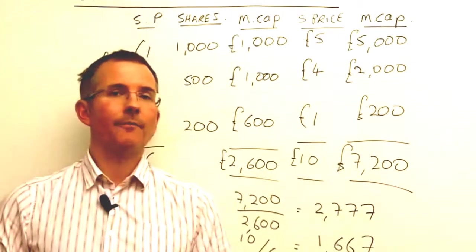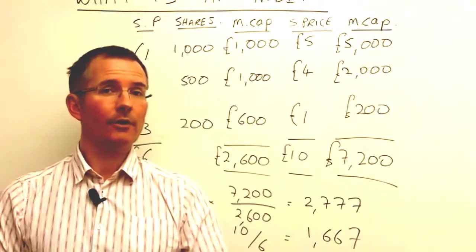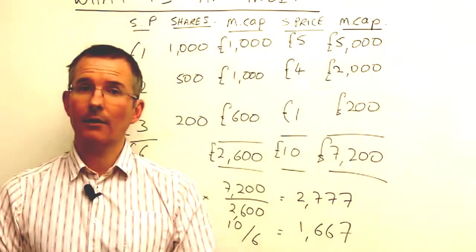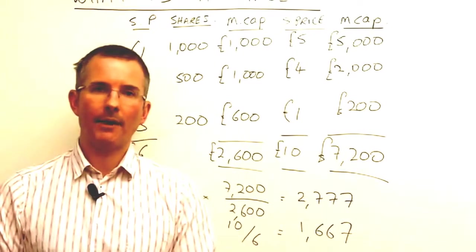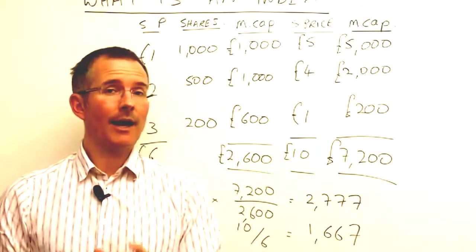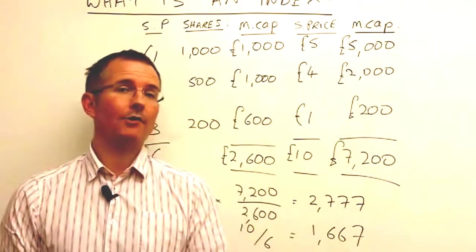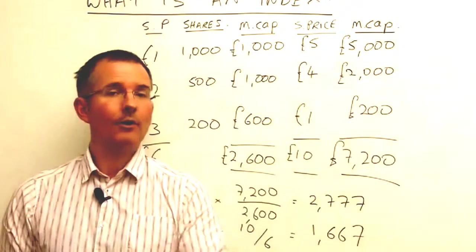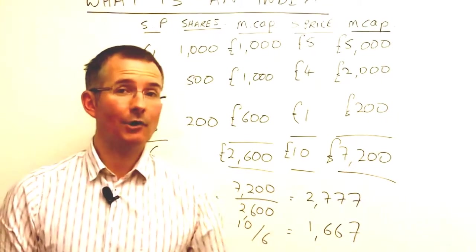So, a few observations. Number one, you can't directly compare the FTSE 100 and the Dow Jones, because they're constructed differently. They will sort of follow each other, and they often do, but just be aware that they're actually put together on a different basis. The Dow Jones is only 30 stocks, the FTSE is 100, and the Dow Jones is price-weighted, whereas the FTSE is, if you like, a value or market capitalisation-weighted.